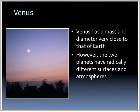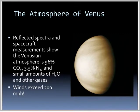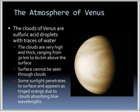Let's move on to Venus. Venus has a mass and diameter very close to Earth; however, the two planets have radically different surfaces and atmospheres. Reflected spectra and spacecraft measurements show the Venusian atmosphere is 96% carbon dioxide, a little bit of nitrogen, and small amounts of water and other gases. The winds on the surface of Venus exceed 200 miles an hour. The clouds we see on Venus are actually sulfuric acid droplets with a little bit of water, ranging from 30 to 60 kilometers above the surface — we really can't see the surface through the clouds.